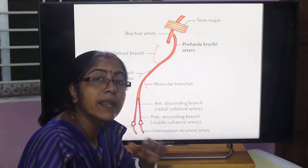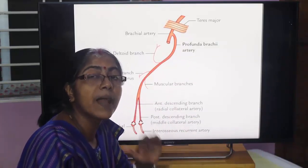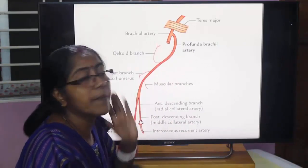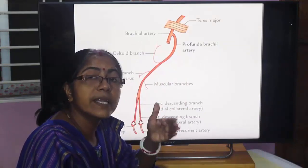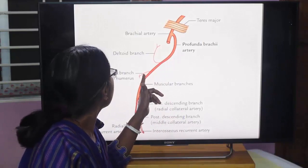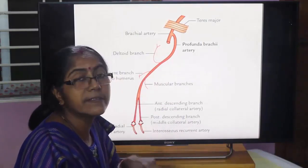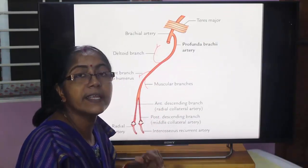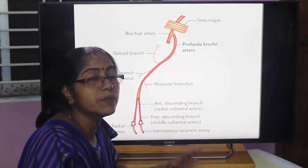The arteria profunda brachii accompanies the radial nerve in the spiral groove of the humerus. Its terminal branches — the anterior descending (radial collateral artery) and posterior descending (middle collateral artery) — take part in the anastomosis around the elbow joint.